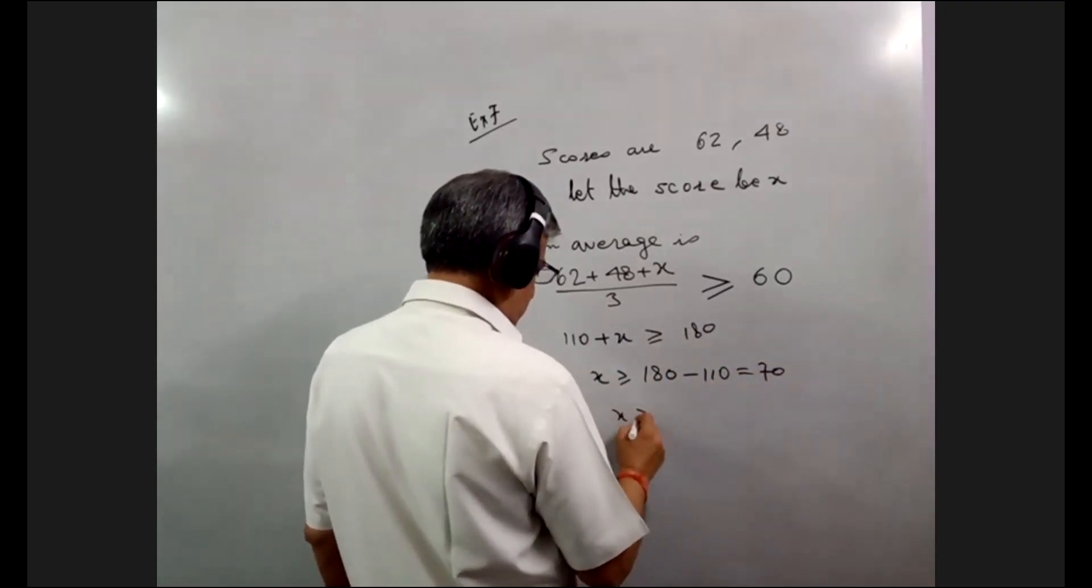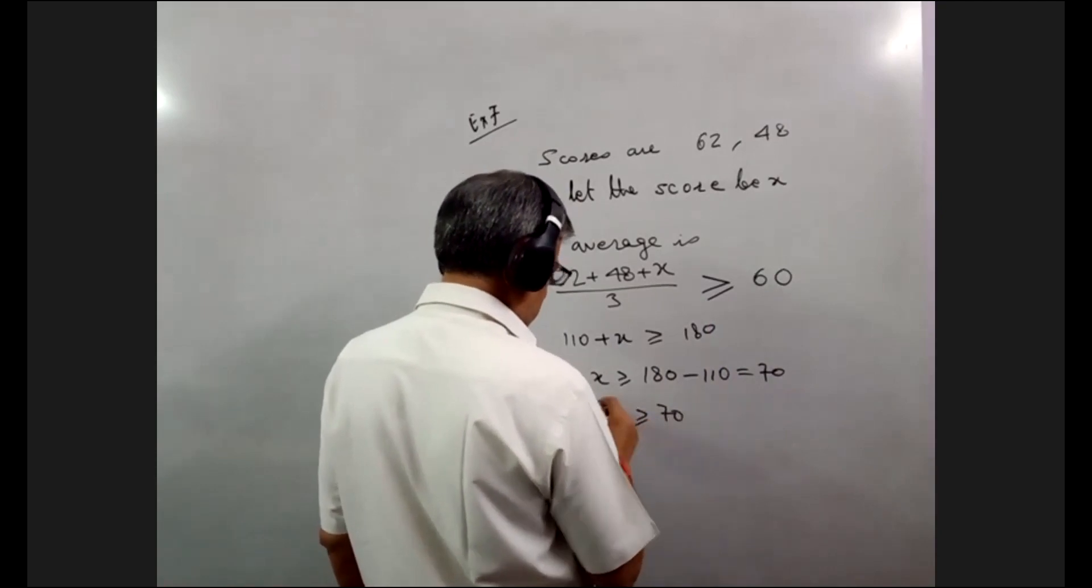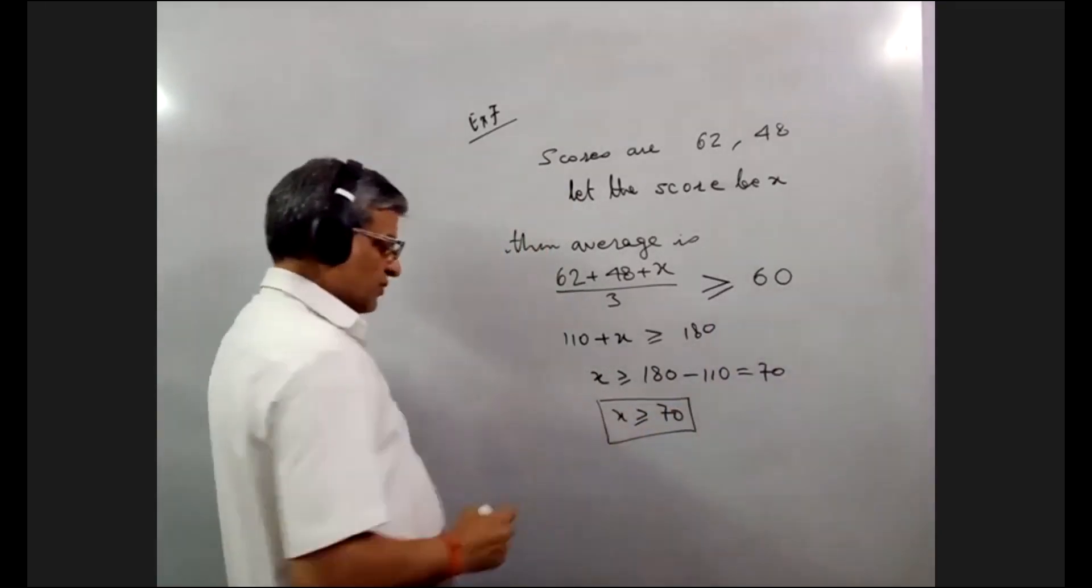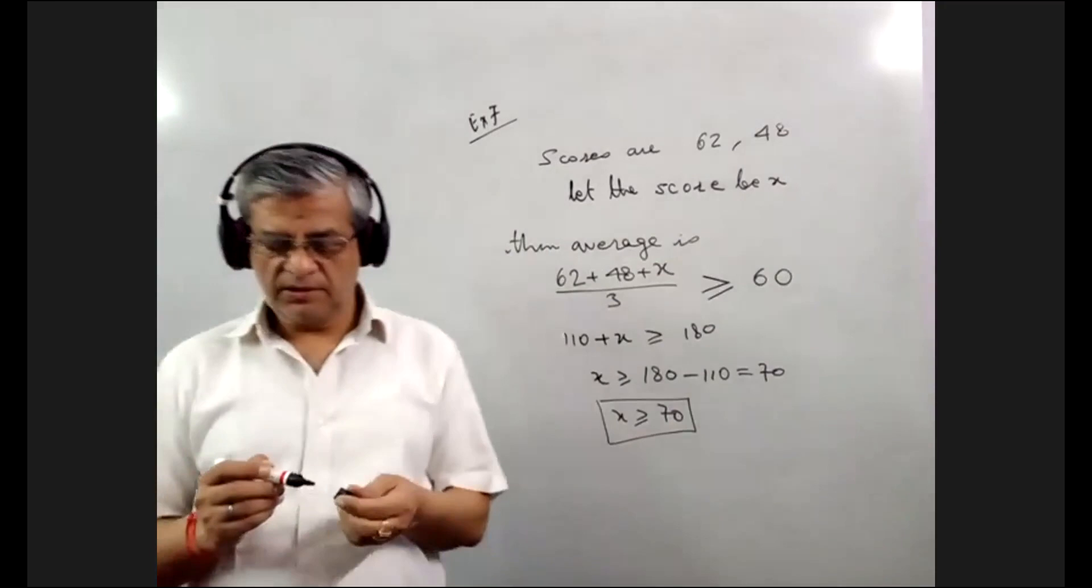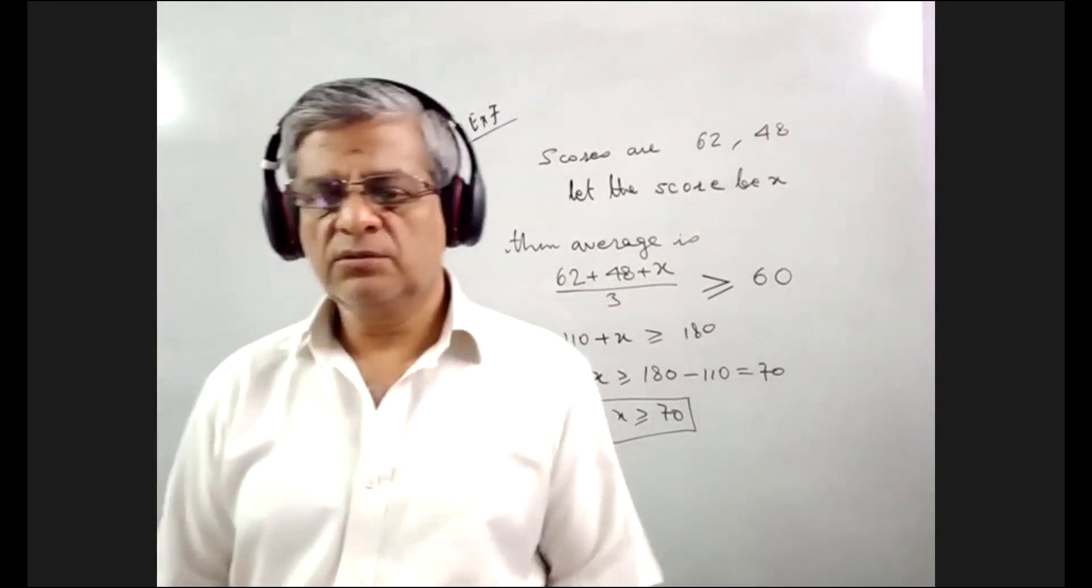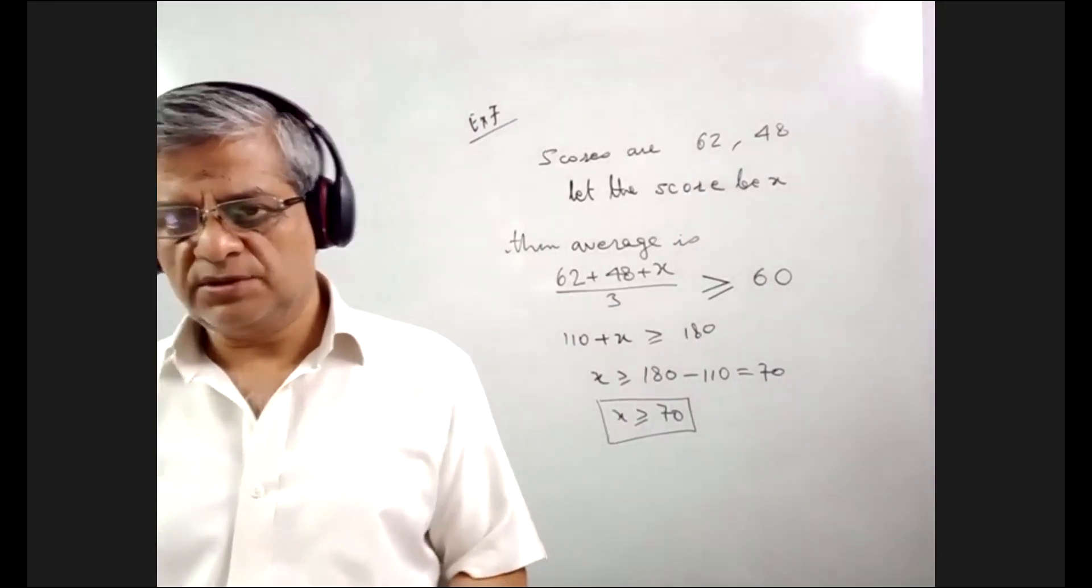So, this score the person should acquire should be more than equal to 70. So, the average is 60. That is the question.